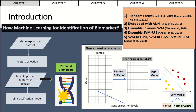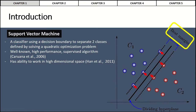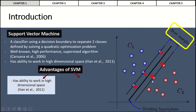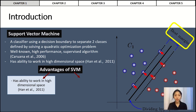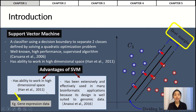Different types of machine learning approaches have been used for identification of significant features or classification on gene expression data — for example, random forest, artificial neural network, decision tree, and support vector machine. Among all of them, one of the most famous is support vector machine. SVM is a classifier using a decision boundary to separate two classes, defined by solving a quadratic optimization problem. It finds an optimal hyperplane that maximizes the distance between the training samples, called support vectors, and the hyperplane. It is well-known for high performance and is a supervised algorithm, favored by many researchers for classification tasks due to its ability to work in high-dimensional space and its suitability for genomic data in bioinformatics applications.